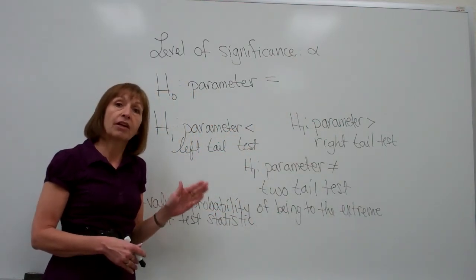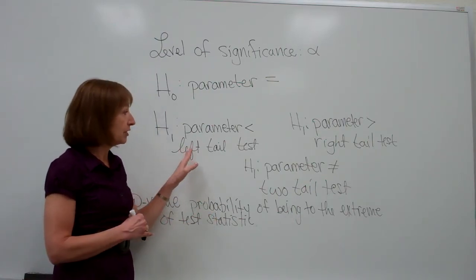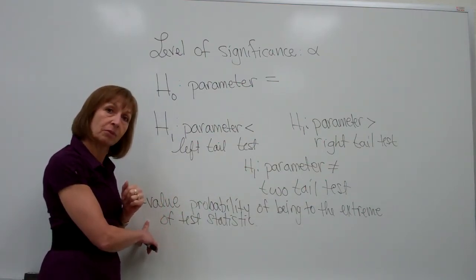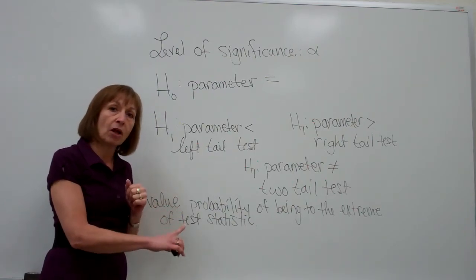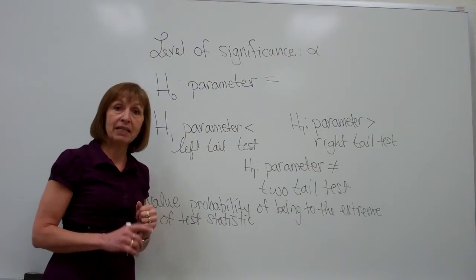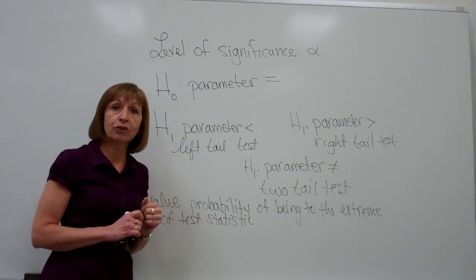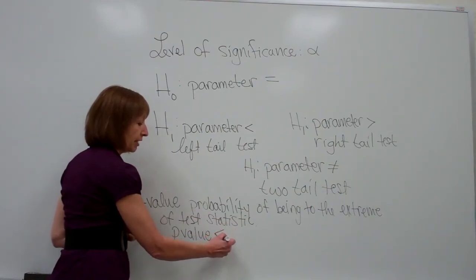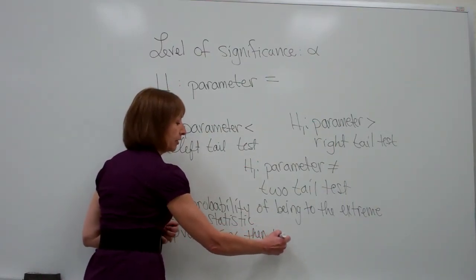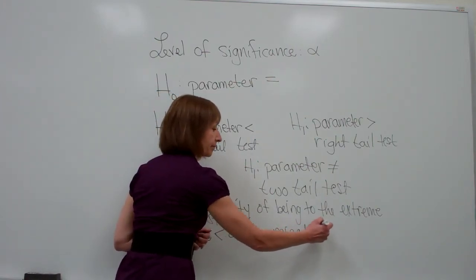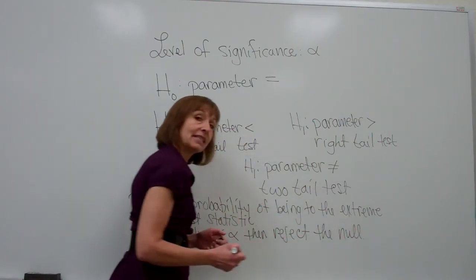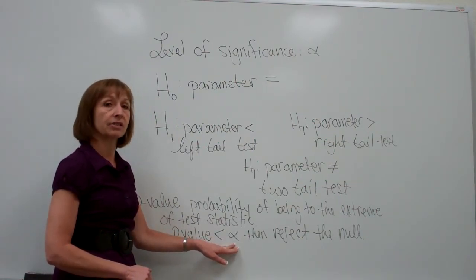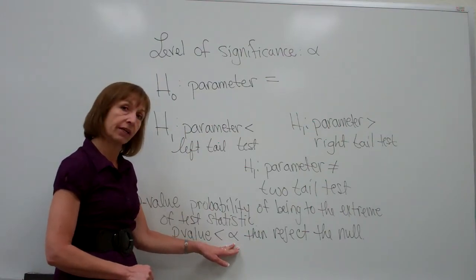We make our decision by comparing the p-value to alpha. If our p-value is smaller than our alpha — whether it's a left tail, right tail, or two tail test — you reject the null. If the p-value is not smaller than your alpha, you fail to reject the null. This is a very easy comparison from something that your statistical package or graphing calculator will report to you.